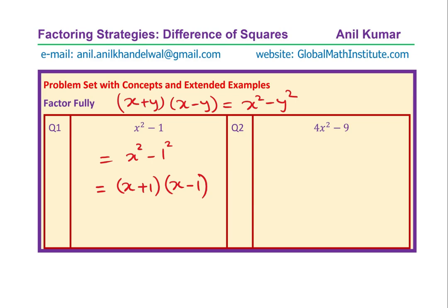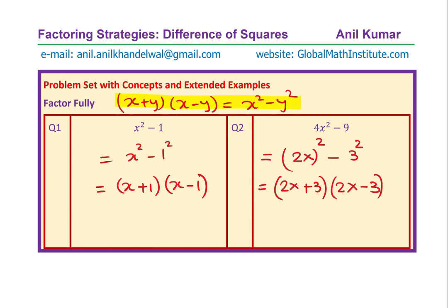The next one is 4x squared minus 9. You can write 4x squared as (2x) squared, and 9 is 3 squared. So again we have difference of squares. To factor, we write their sum and difference: 2x plus 3 times 2x minus 3. With these two basic examples, the concept is clear: x squared minus y squared equals x plus y times x minus y, and that is what we call factoring.